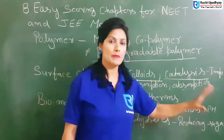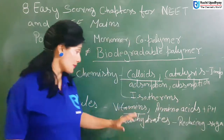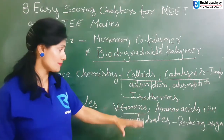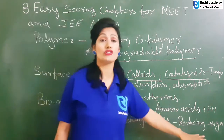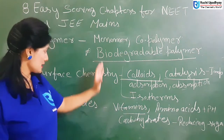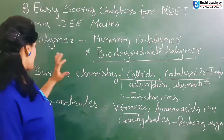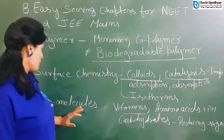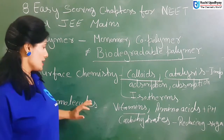You will need to study carbohydrates, particularly reducing sugar in carbohydrates. So these are your three chapters to start with: polymers, surface chemistry, and biomolecules. Make sure you cover the important topics I mentioned.